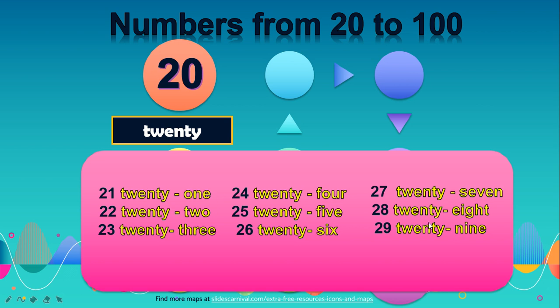So this one to nine we have already studied in the previous class, so you just need to learn this twenty. You just write, rewrite this twenty, and then you can write one till nine. So up to 29.